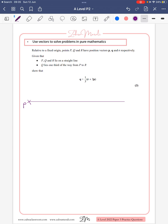Relative to a fixed origin, we've got points P, Q, and R, and Q lies one third of the way from P to R. So we've got one third and two thirds.